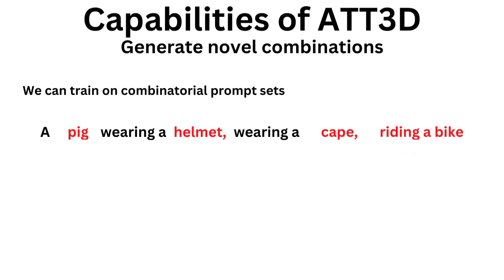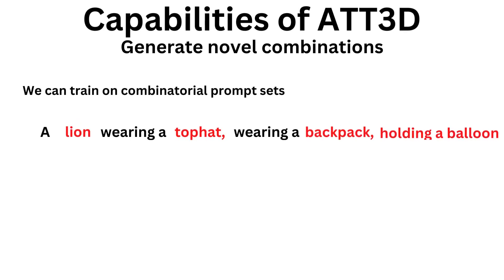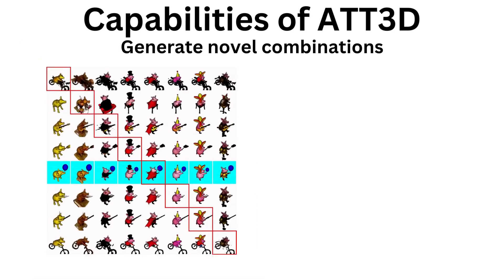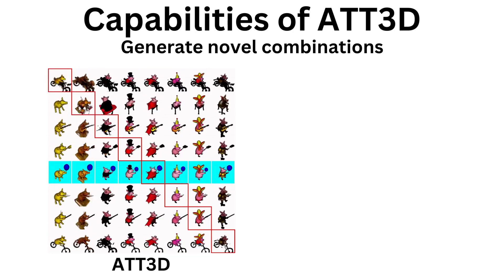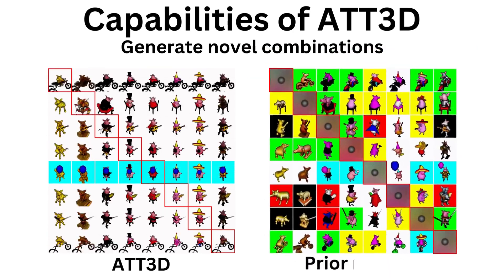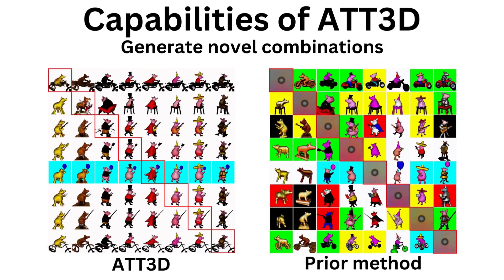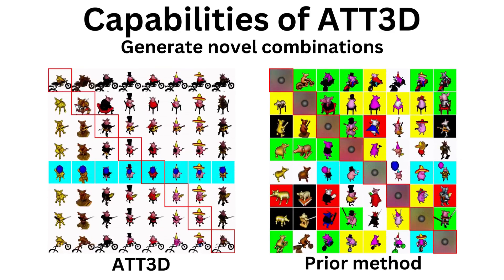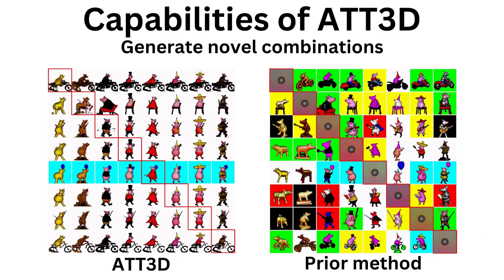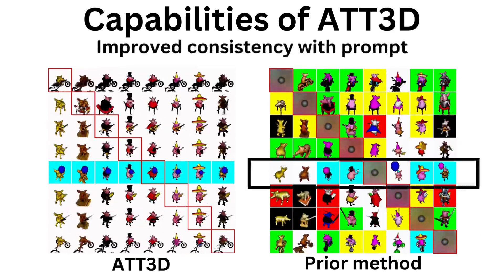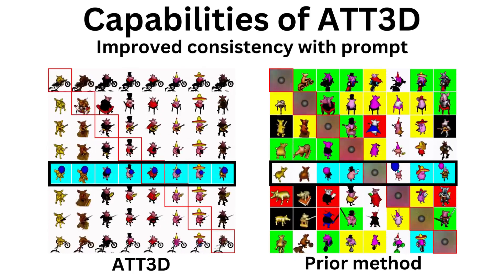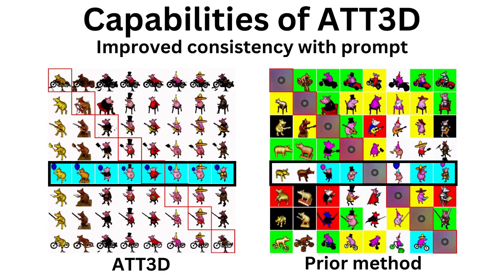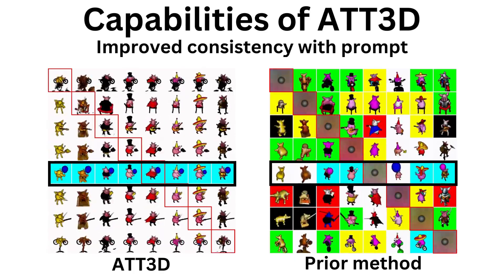We gain new capabilities like generating novel prompt compositions. First, we train on a combinatorial prompt set — the combinations shown along the diagonal in red were never seen during optimization. Prior methods only memorize a single prompt and can't generalize without training. We also improved consistency by always outputting pigs with a blue balloon, whereas existing methods might only make the background blue or fail altogether.